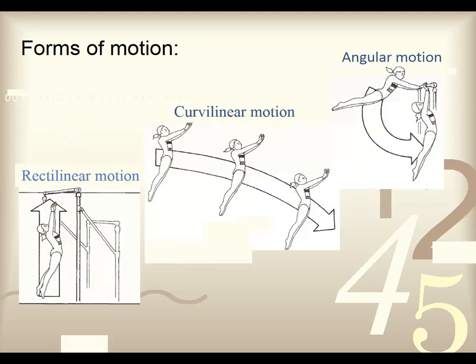Rectilinear motion: a girl jumping toward a bar to grab it — if she did a pull-up and went straight up, that'd be rectilinear. That's the motion of the entire body moving in that direction. If you break it down and look at the movements within her arms, you'd have a lot of curvilinear and angular motions happening at once. Curvilinear motion is shown as she dismounts from the uneven bars, flying outward and downward at the same time. Angular motion is the motion that happens as she swings around on the bar. All these motions happen within the body or as a result of things we do with the body.